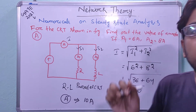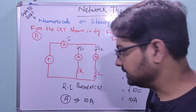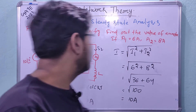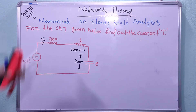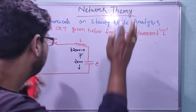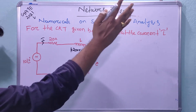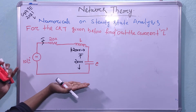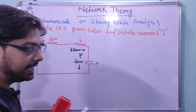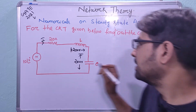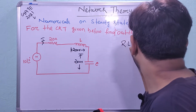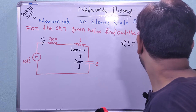The ammeter A reads 10 ampere. This is Problem 2, a previous year GATE problem. Next, for the circuit given below, find out the current I. This is an R-L-C series circuit.